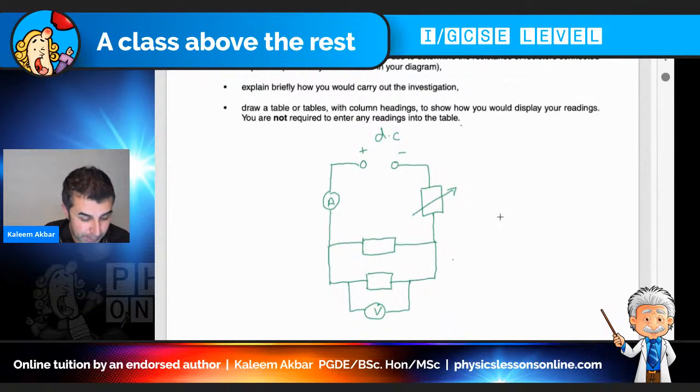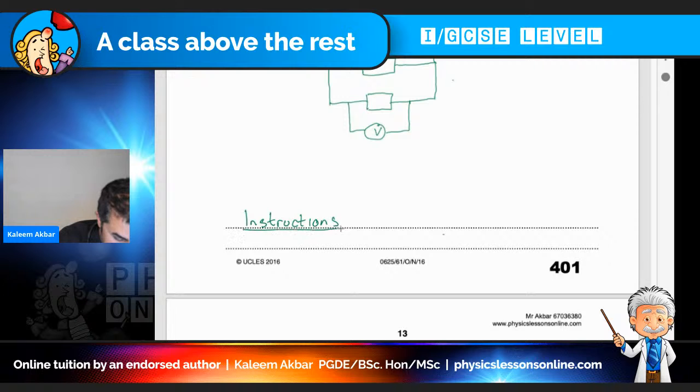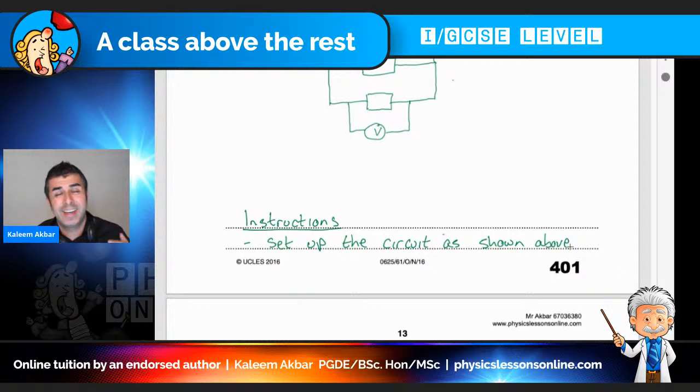Then it says, explain briefly how you would carry out the investigation. Now, when you watch enough of my videos, you're going to notice that my first sentence, my favorite sentence, instructions: set up the circuit as shown above. Now, the reason for this is, what's that saying? A picture paints a thousand words. Well, basically, by drawing the diagram and just saying, set up the circuit as shown above, I take away a lot of description, take away a lot of writing, by basically referring the examiner to the diagram. That's why it's nice and simple.